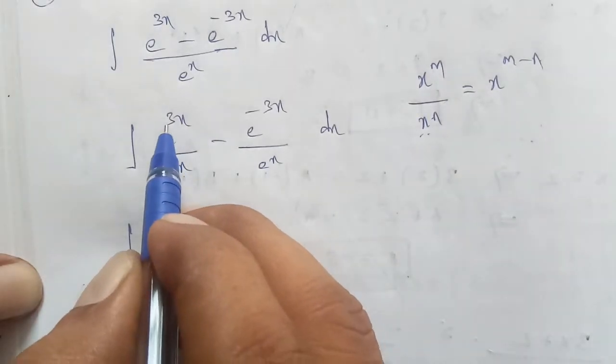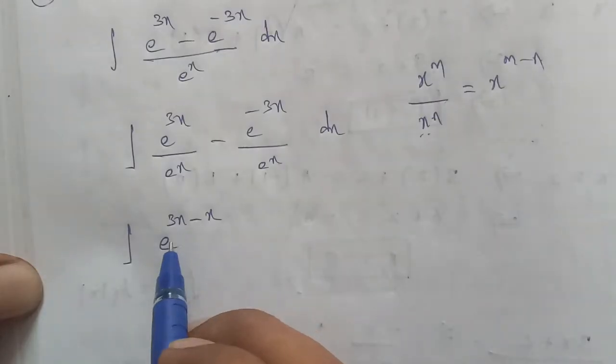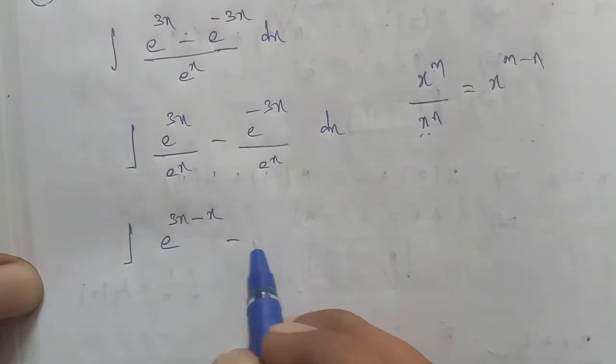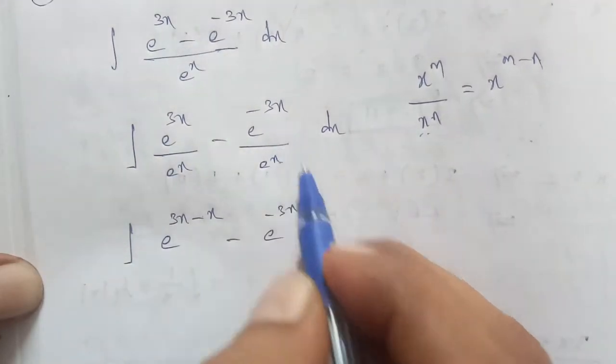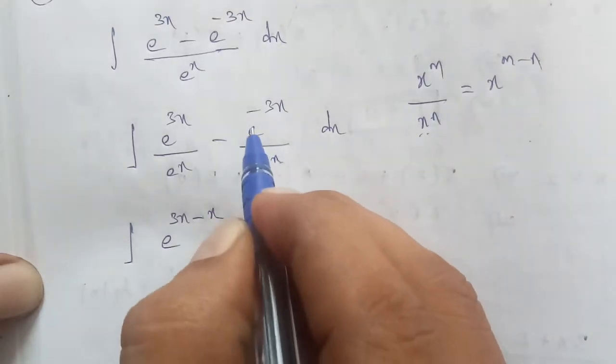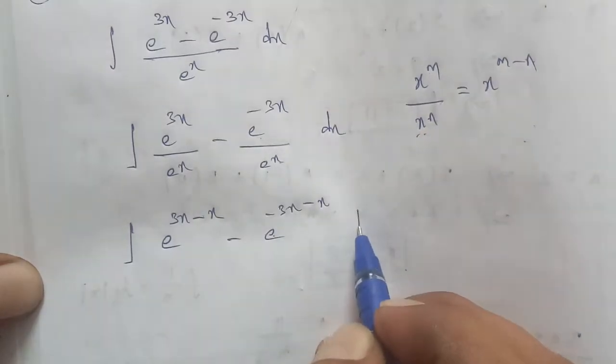So e^(3x) / e^x = e^(3x-x) = e^(2x). Next, for e^(-3x) / e^x, we have e^(-3x-x) = e^(-4x).